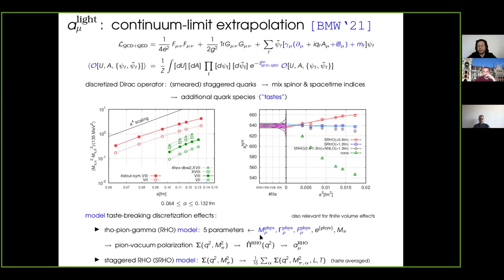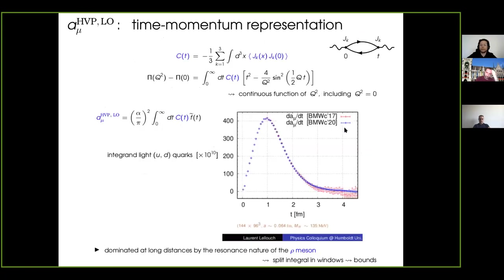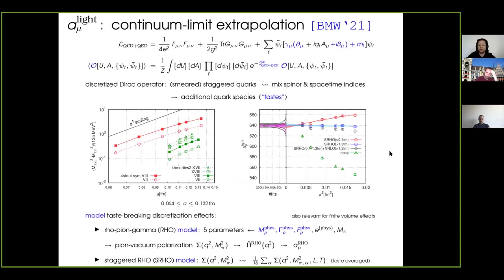Within this model, you can compute the pion vacuum polarization and therefore a_mu from the model. You can also staggerize the model by replacing this pion vacuum polarization by the vacuum polarization averaged over the various taste states. What they do is take their measurements of a_mu — the red triangles — add the continuum rho model, and subtract the staggered rho model, so that in the continuum this correction goes away. Through this procedure they model the effects of taste-breaking. Depending on where you apply the model, you have a different continuum limit extrapolation, and this histogram illustrates the systematic effect associated to this continuum extrapolation.